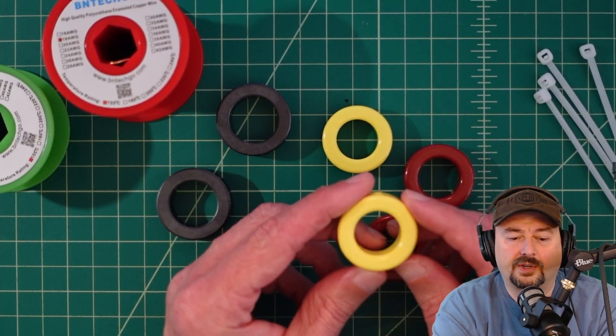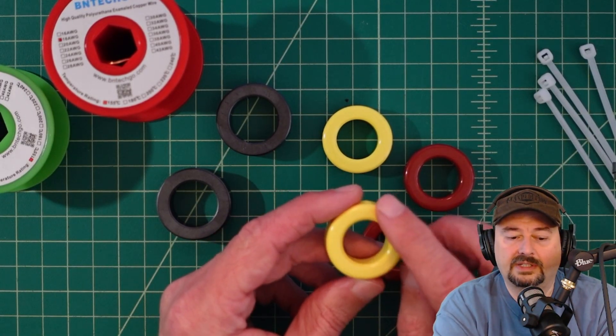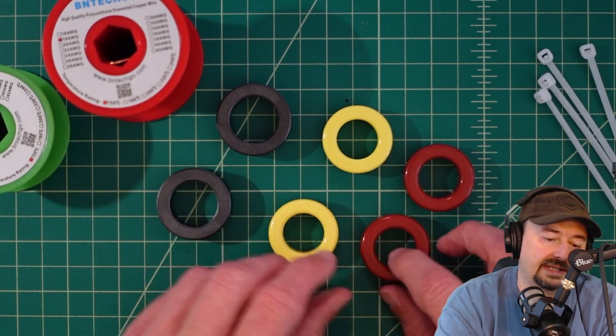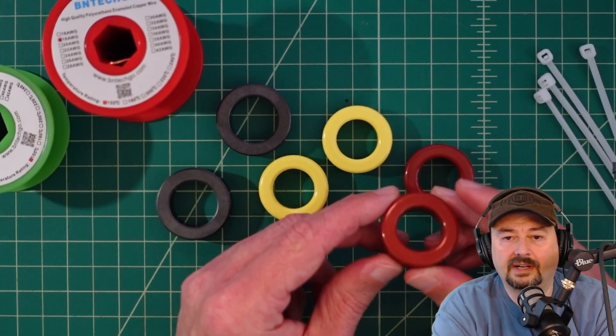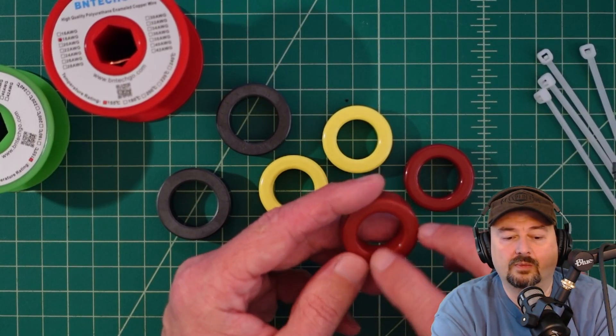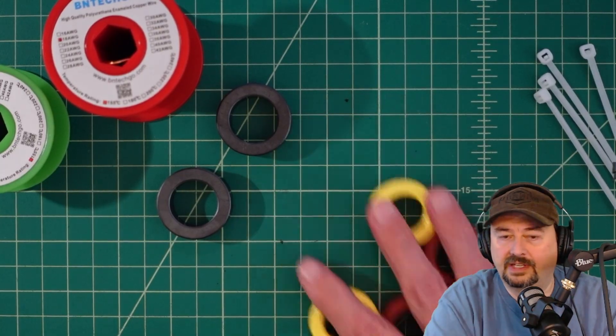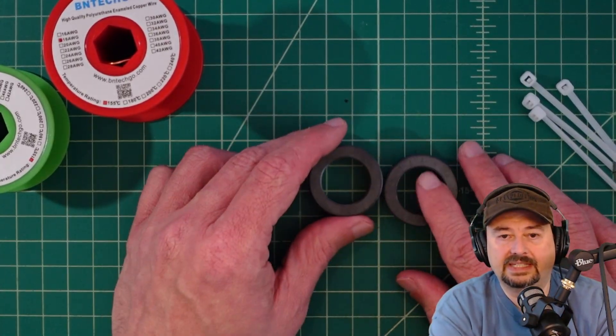Then we have these 130, so it's 1.3 inches in diameter, mix 6 powdered iron core. This is a mix 2 powdered iron core, also a T-130. For this video we're going to test these.